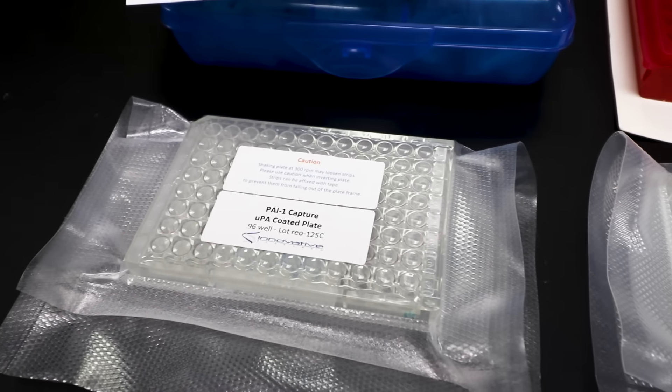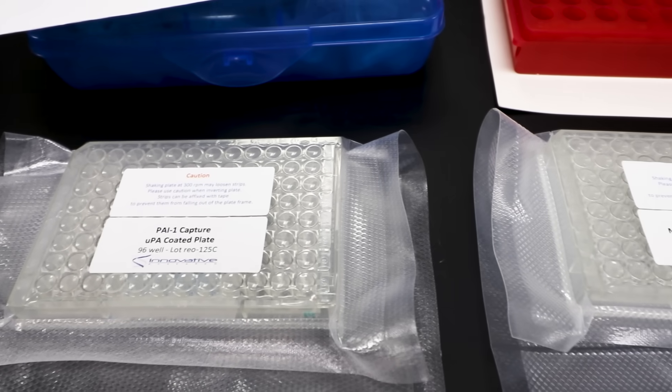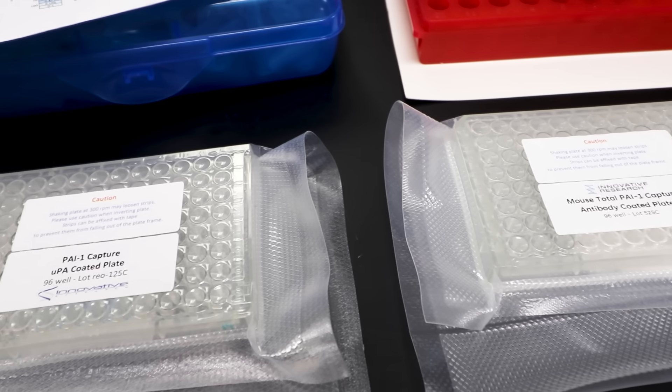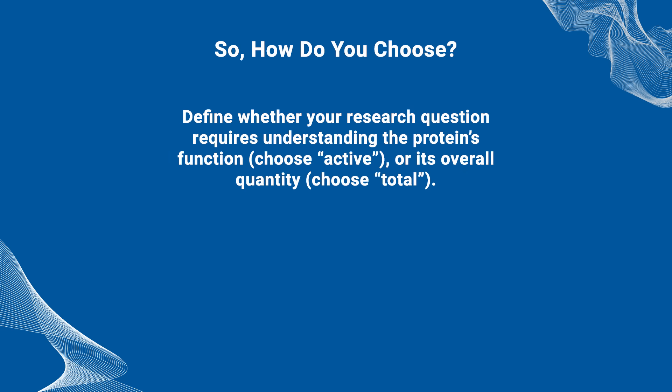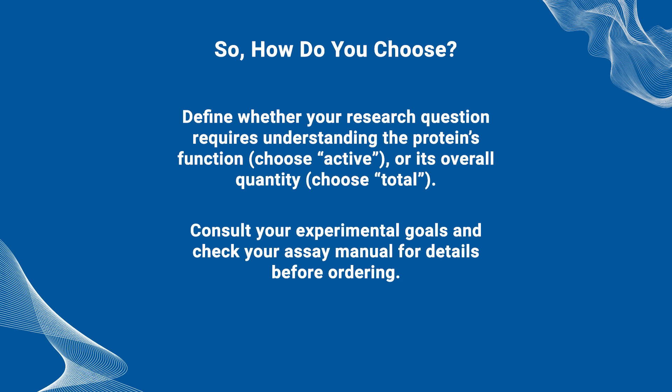At Innovative Research, we have the mouse PAI-1 active ELISA kit, specifically designed to measure the activity of PAI-1, so the functional assay measures only the active form of the protein. The mouse PAI-1 total ELISA kit is designed to measure all forms of PAI-1 regardless of its activity. So, how do you choose? Define whether your research question requires understanding the protein's function — choose active — or its overall quantity — choose total. Consult your experimental goals and check your assay manual for details before ordering.